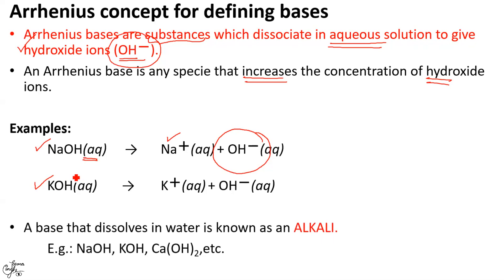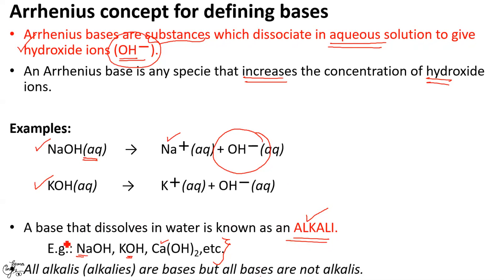Not all bases are soluble in water. A base that dissolves in water is given a special name called an alkali. For example, sodium hydroxide, potassium hydroxide, and calcium hydroxide are bases that dissolve in water and hence are also called alkalis. After knowing what alkalis are, can we say that all alkalis are bases but all bases are not alkalis? Give that statement some thought.